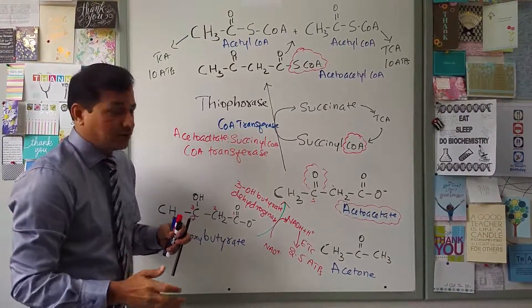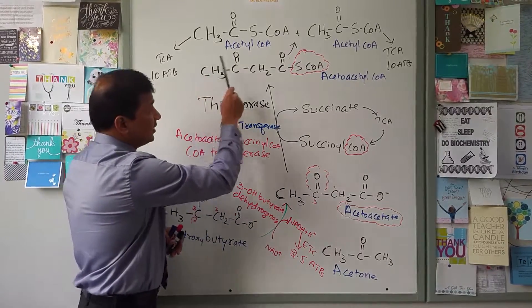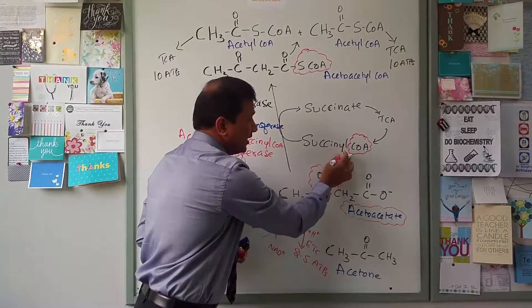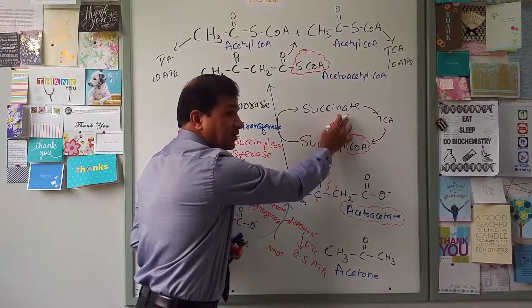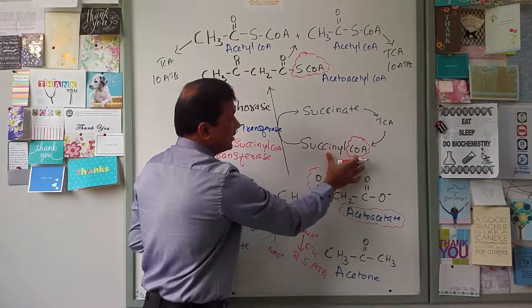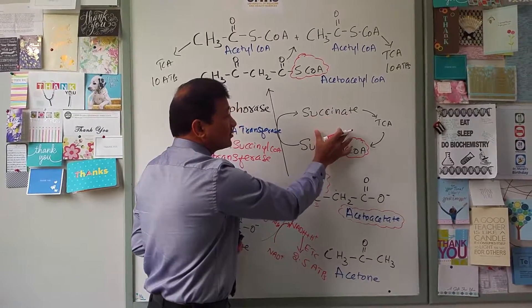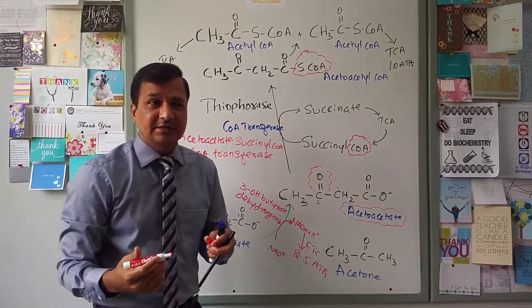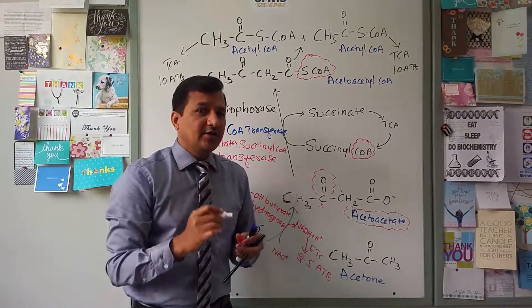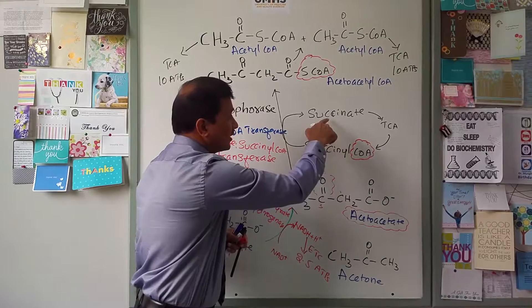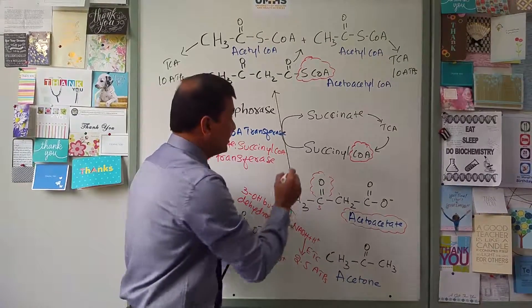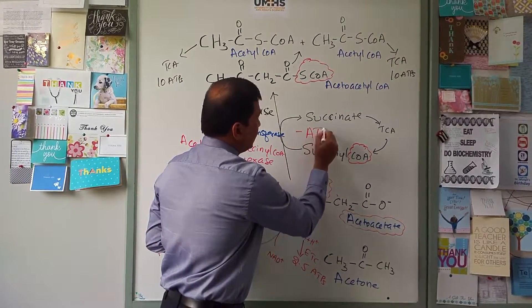So you get 10 ATP from one acetyl CoA and 10 ATP from the other. However, note that succinyl CoA is a TCA cycle intermediate. As it is being converted to succinate, you are losing one ATP from the TCA cycle — because normally succinyl CoA to succinate, catalyzed by succinyl thiokinase, produces 1 GTP. Since succinyl CoA is consumed here without making GTP, there is a loss of 1 ATP, so you write minus 1 ATP.